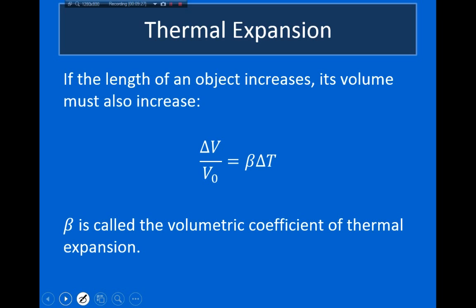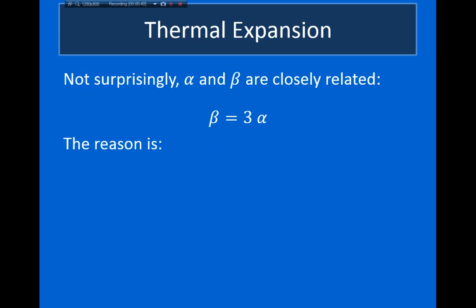Obviously, if the length of an object increases as its temperature increases, then the volume of the object will also increase. The formula describing the change in volume is very similar: the fractional change in volume equals the volumetric thermal expansion coefficient, beta, times the change in temperature. It turns out that the volumetric thermal expansion is always equal to three times the linear thermal expansion.